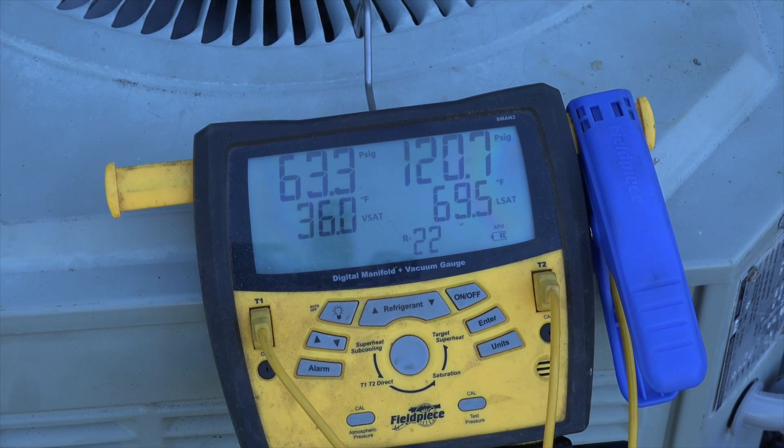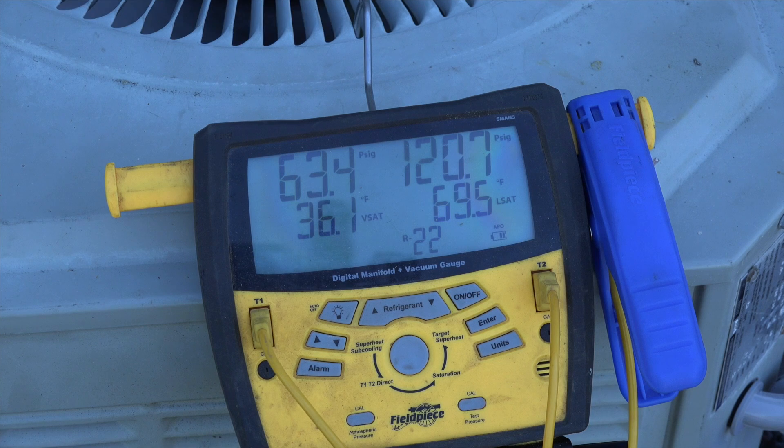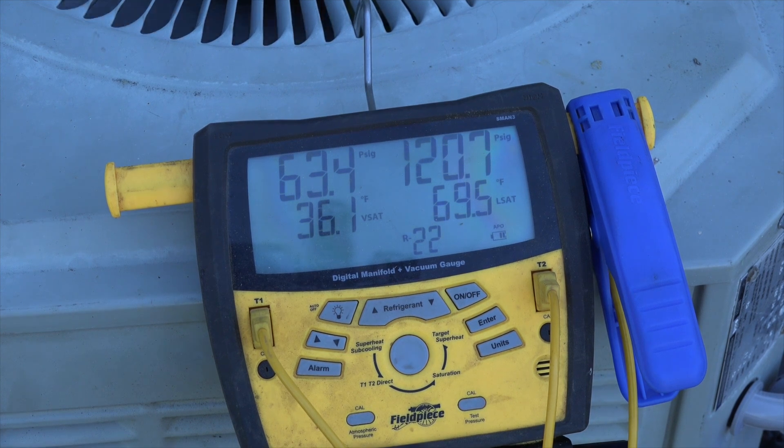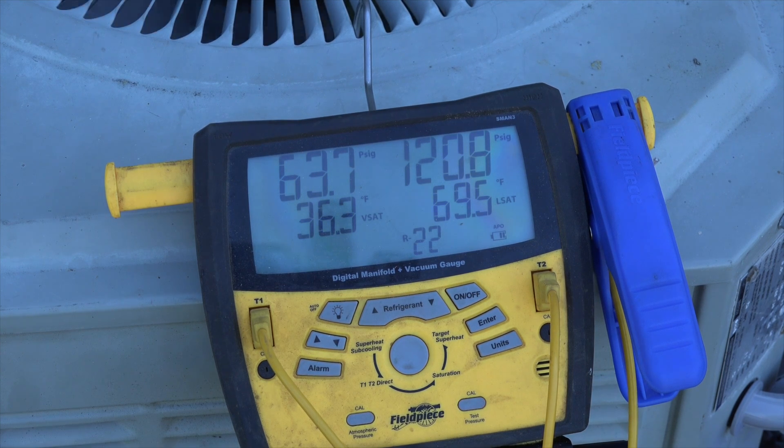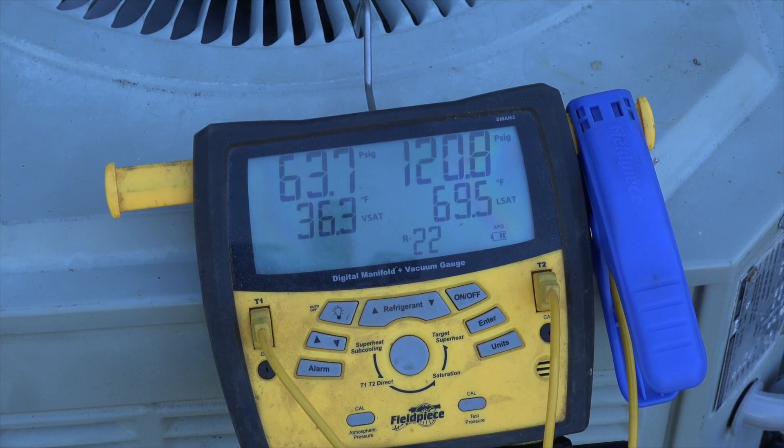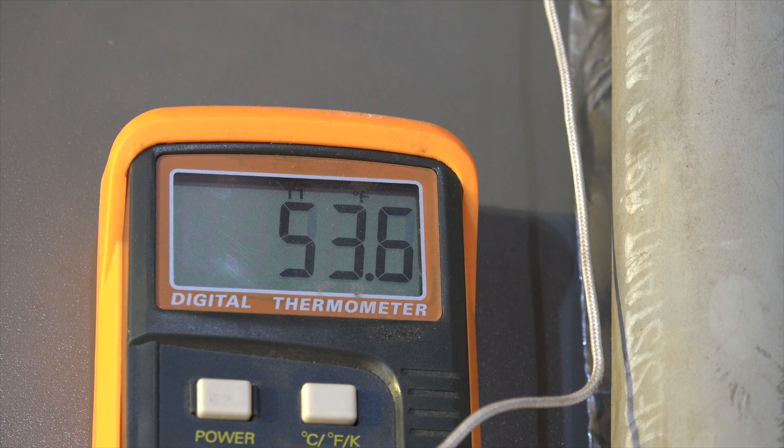Now let's look at the evaporating temperature. Ignore the condensing temperature—I don't have that gauge hooked up. The evaporating pressure is 63.4, which corresponds to 36.2 as an evaporating temperature. So we are below dew point on our evaporating temperature.